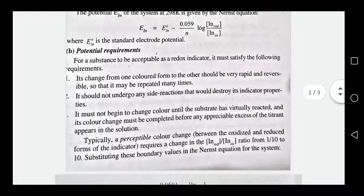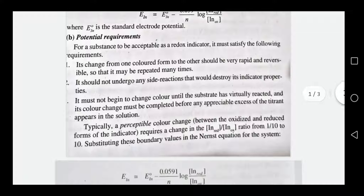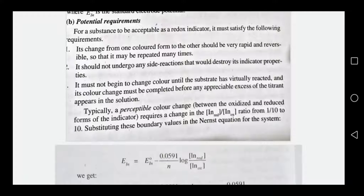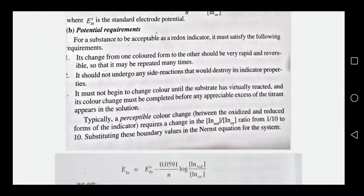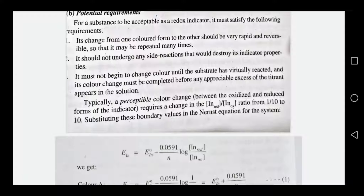The requirements of a redox indicator are: the change from one colored form to the other should be very rapid and reversible, and may be repeated many times. It should not undergo any side reaction that would destroy its indicator properties. It should not change color until the substrate has virtually reacted, and its color change must be completed before any appreciable excess of titrant appears in solution.